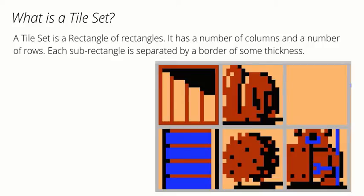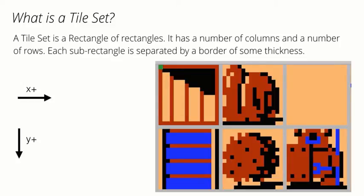A Tileset is a rectangle of rectangles. It has a number of columns and rows, and each sub-rectangle is separated by a border of some thickness. The pixel in the upper left-hand corner, in screen coordinates, is at 0,0, but I want to start drawing my tile from position 1,1. Screen coordinates have x-positive going right and y-positive going downward. A tile has a width of 16 pixels and a height of 16 pixels, not including the gray border.